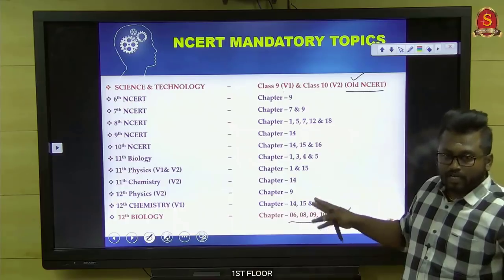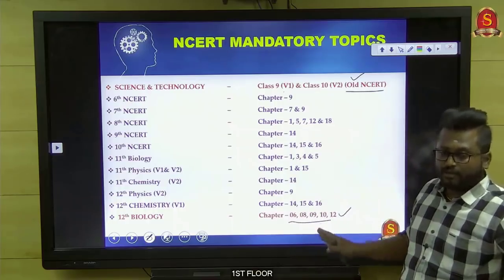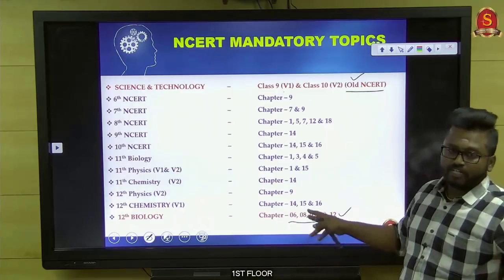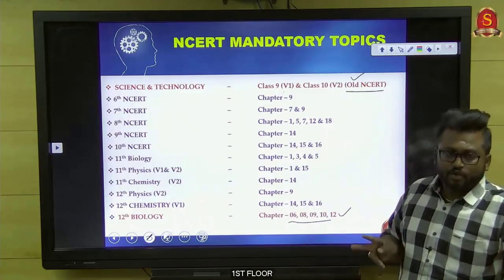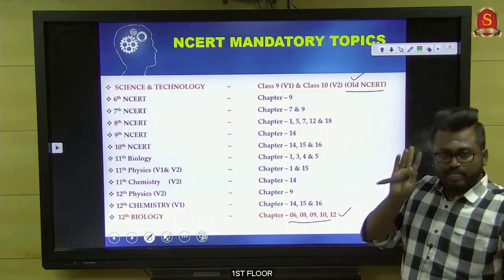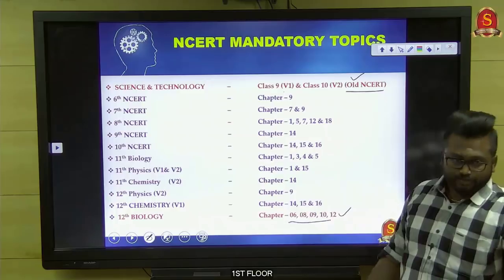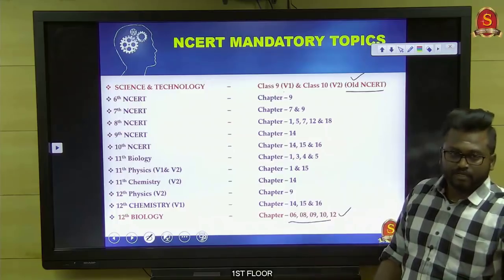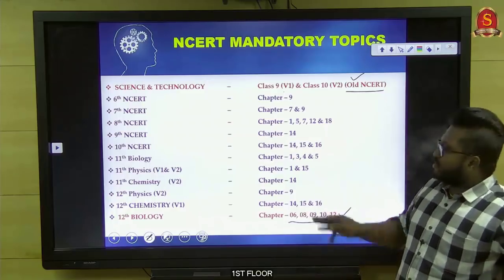Go through the 12th biology book — at least two to three questions will come from biotechnology-based topics. This year we received two questions whose four options were exactly from the biology book. The reflection is there in the biology book. For the 6th, 7th, 8th, 9th, and 10th NCERT science books — if you have a sufficient amount of time, go through selected topics. At this crucial time, focus only on the essential topics in red.